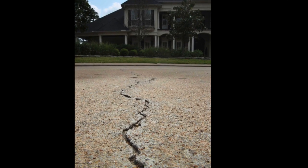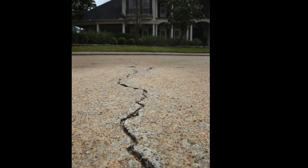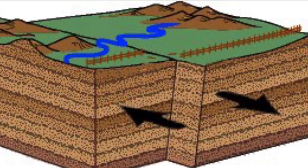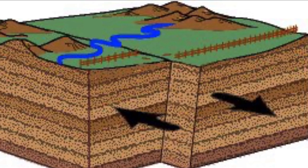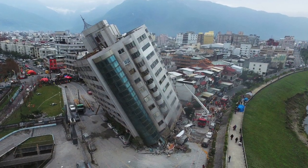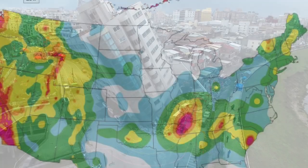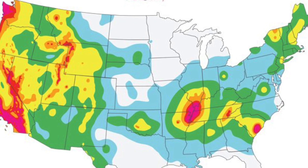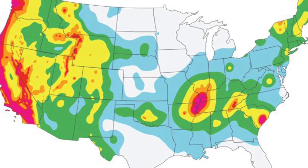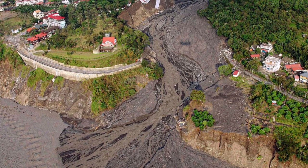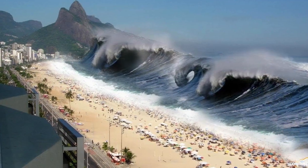Construction workers also want to find out if a construction site is near a fault. A fault is a fracture or zone of fractures between two blocks of rock. During an earthquake, the rock on one side of the fault suddenly slips with respect to the other. If a building is on top of that fault or even near it, it could get very damaged during an earthquake. To avoid faults, construction workers use hazard maps. A hazard map highlights areas that are affected by or vulnerable to a particular hazard, and they're often created for natural hazards like earthquakes, volcanoes, landslides, flooding, and tsunamis. Hazard maps help prevent serious damage and death.